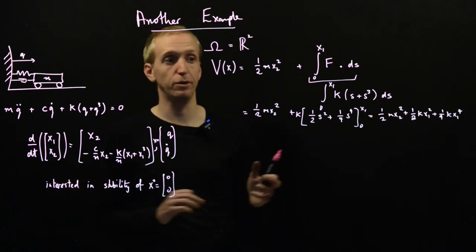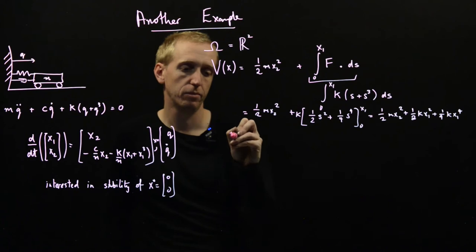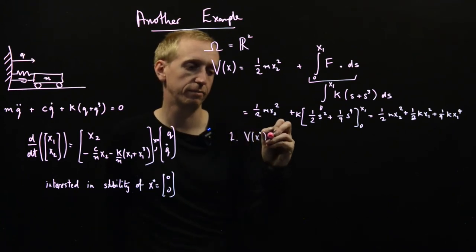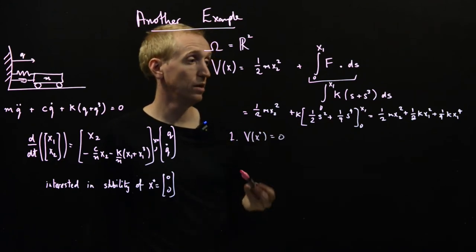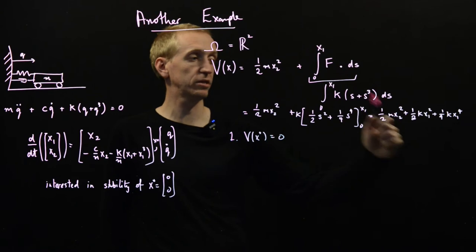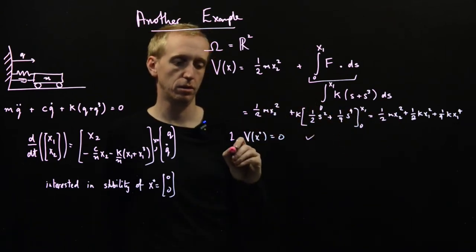Let's just apply our Lyapunov stability results. So the first thing we have to check: V(x star) is equal to 0. Well this is our Lyapunov function. We put x1 equal to 0, x2 equal to 0. This thing is equal to 0. Check.